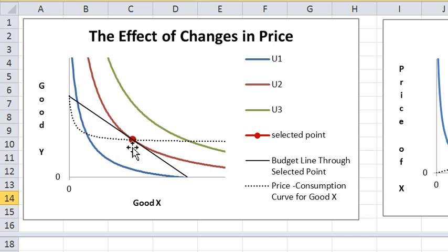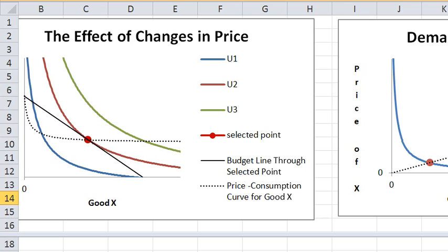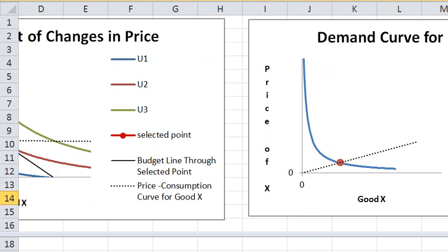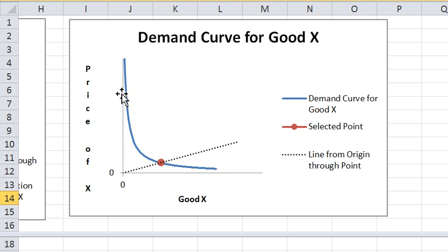And when you lower the price of X, you're getting more X. You can show that relationship here. Let's move further to the right here. So here's that same choice point.